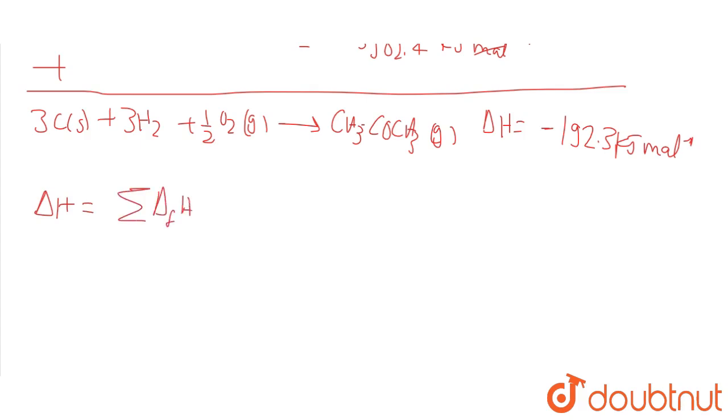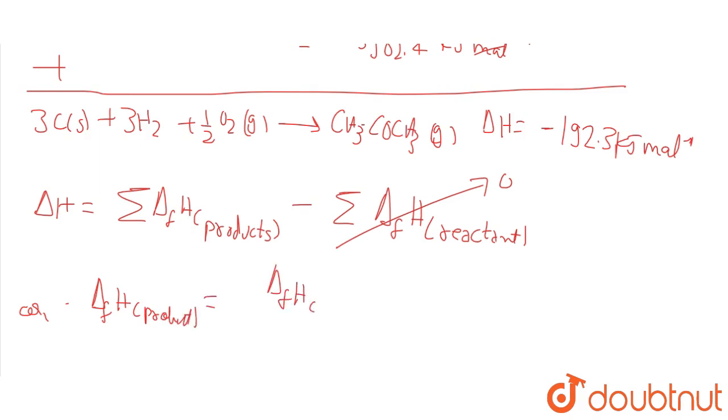Sum of heat of formation of product minus heat of formation of reactant. Heat of formation of reactant is zero. So heat of formation of the product, CH3COCH3, delta H, is minus 192.3 kilojoules mole inverse.